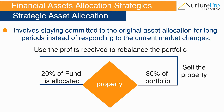Once an investor has done asset allocation by adopting a strategic asset allocation strategy, he or she needs to rebalance the portfolio after a predetermined period — say after every one year — and bring it back to its original allocation. Therefore, the strategic asset allocation strategy involves staying committed to the original asset allocation for long periods instead of responding to current market changes.